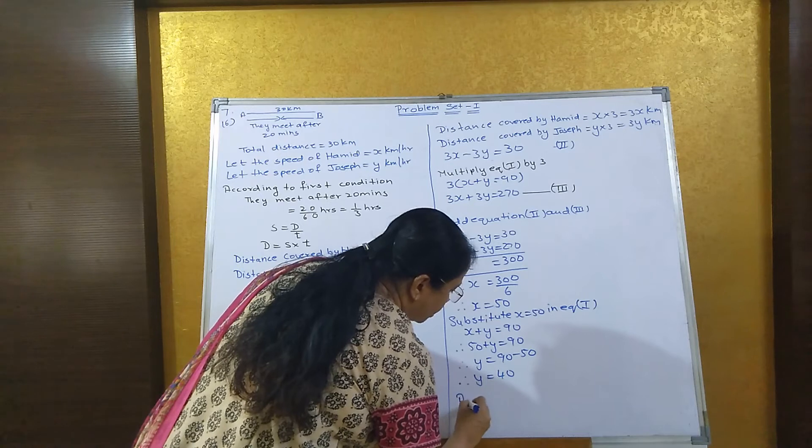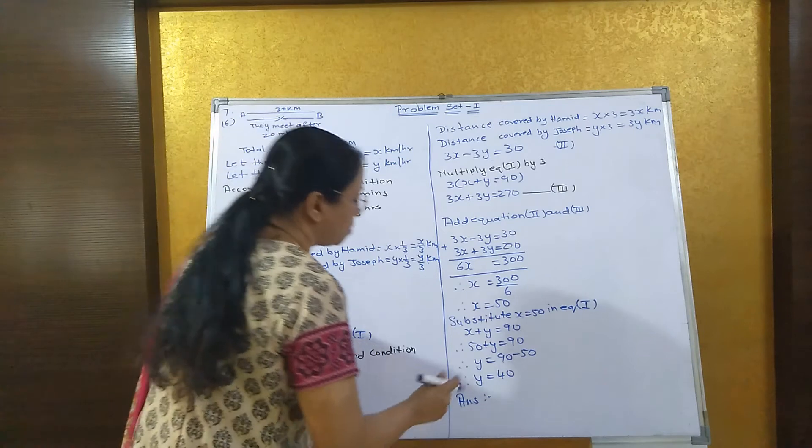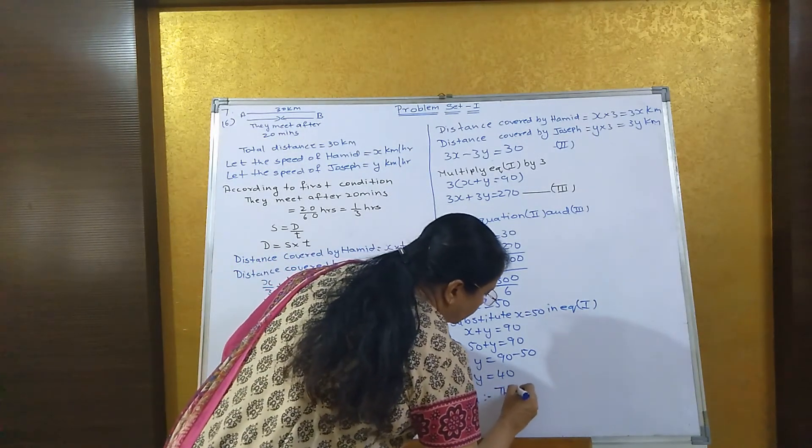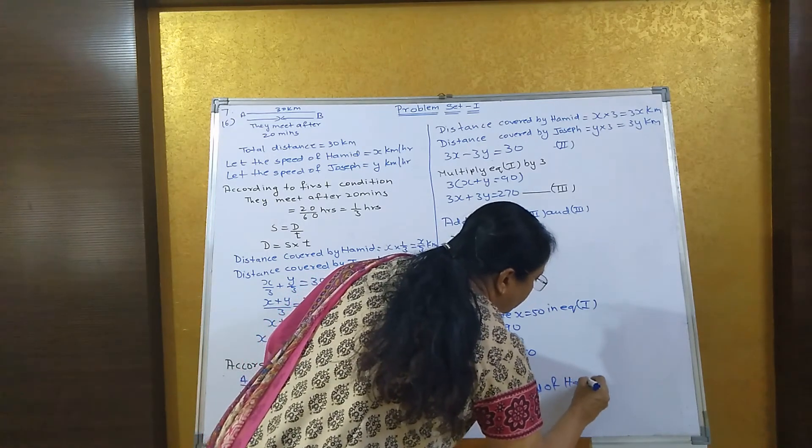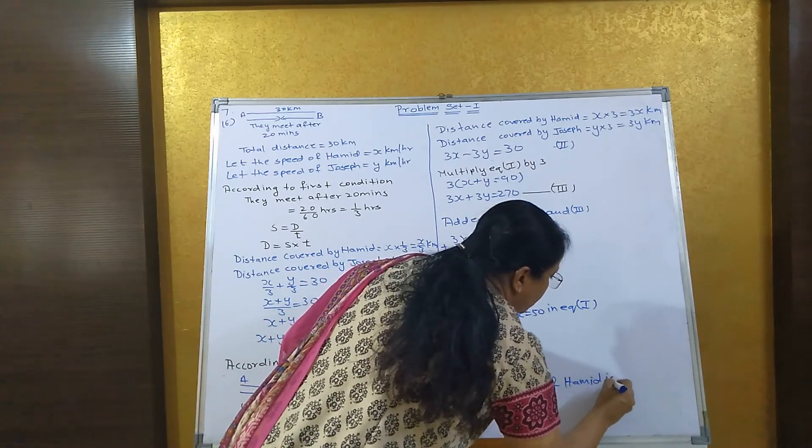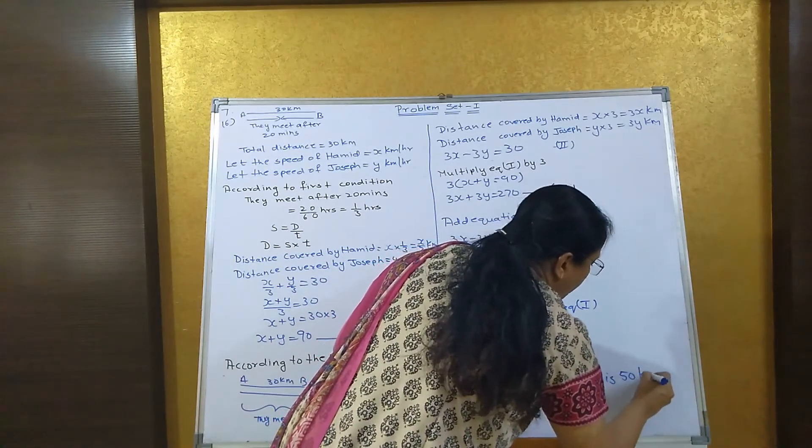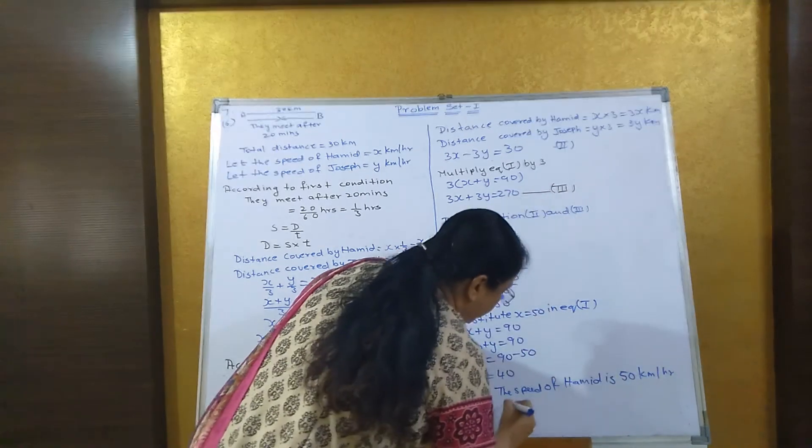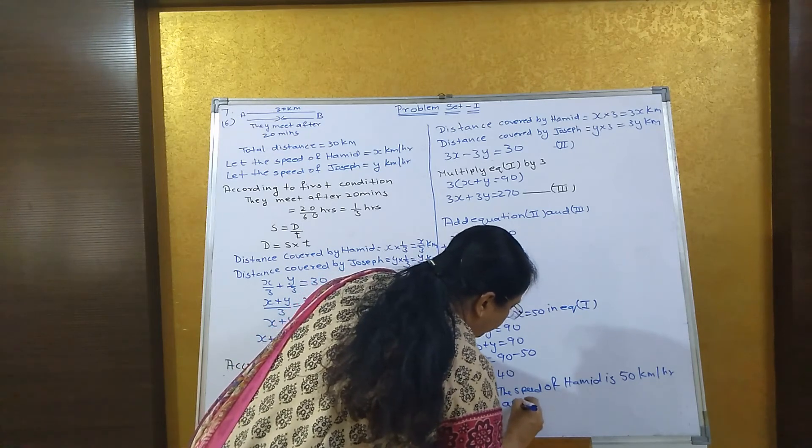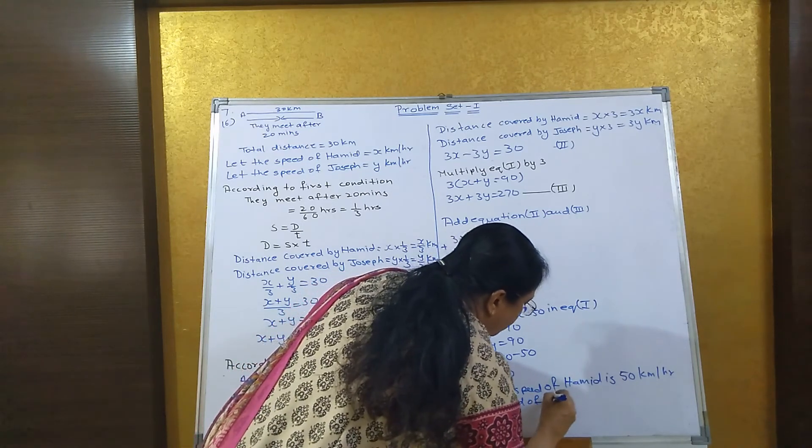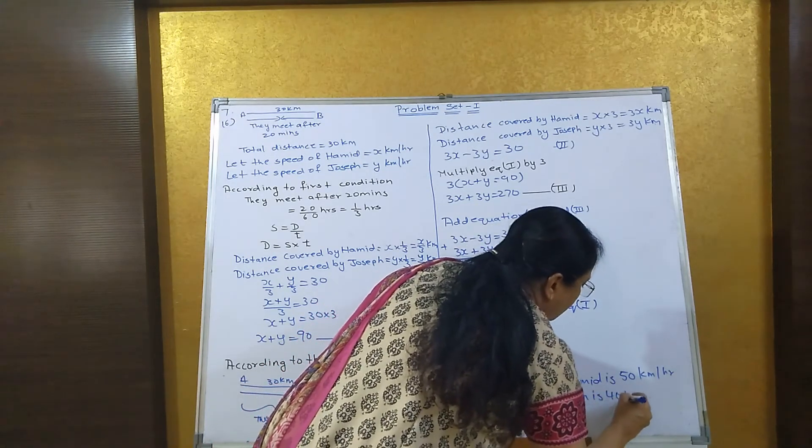So the answer is: the speed of Hamid is 50 kilometer per hour, and the speed of Joseph is 40 kilometer per hour.